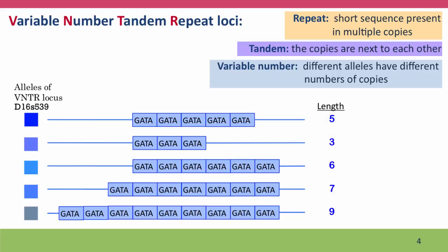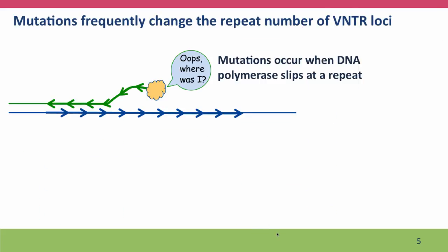VNTR loci are so variable — they have so many different alleles — because DNA polymerase very often makes mistakes when it's replicating these sequences. And the mistakes that it makes aren't that it puts in the wrong base, but that it puts in the wrong number of copies of repeats. And that's illustrated in the next slide.